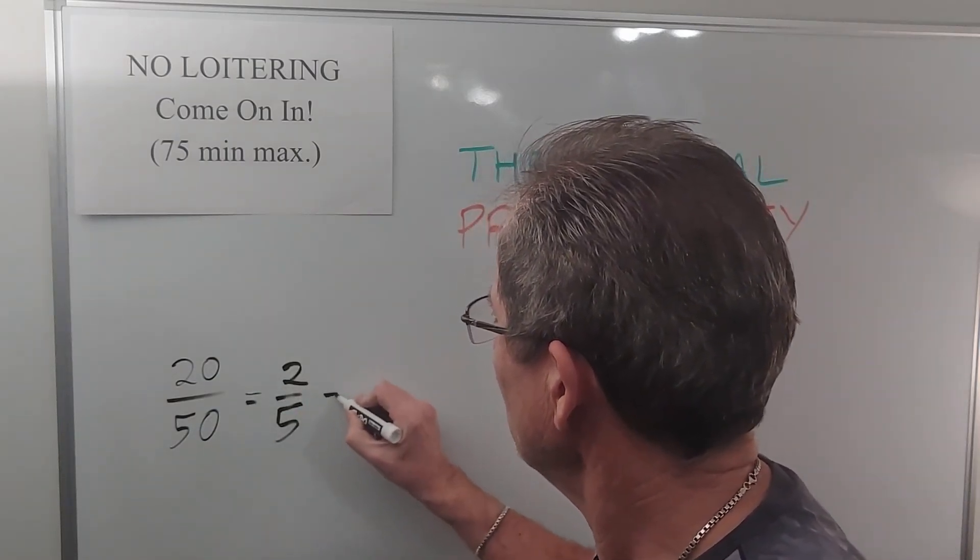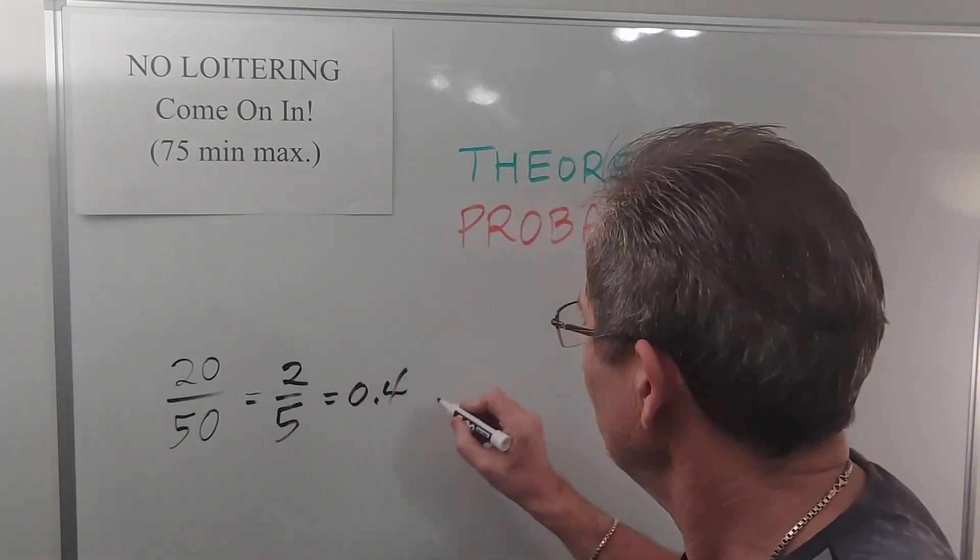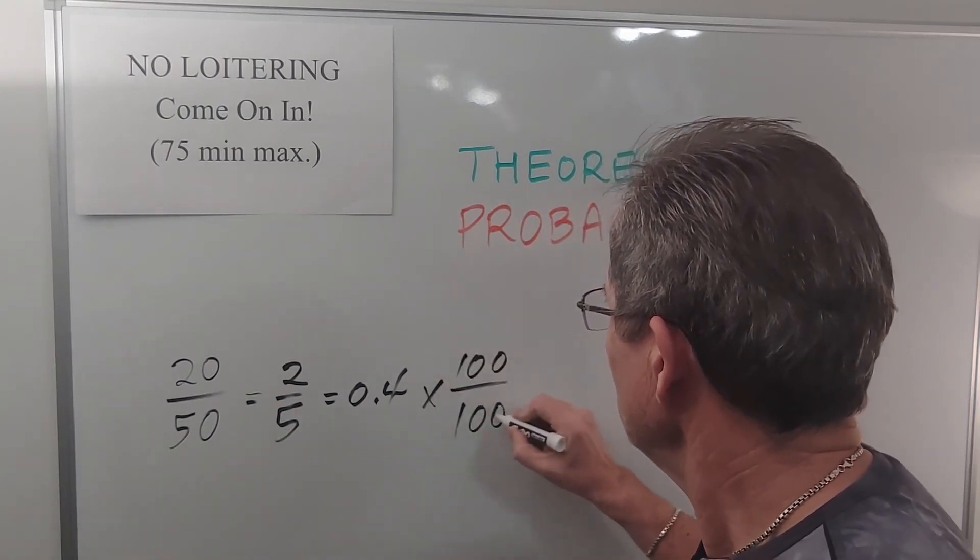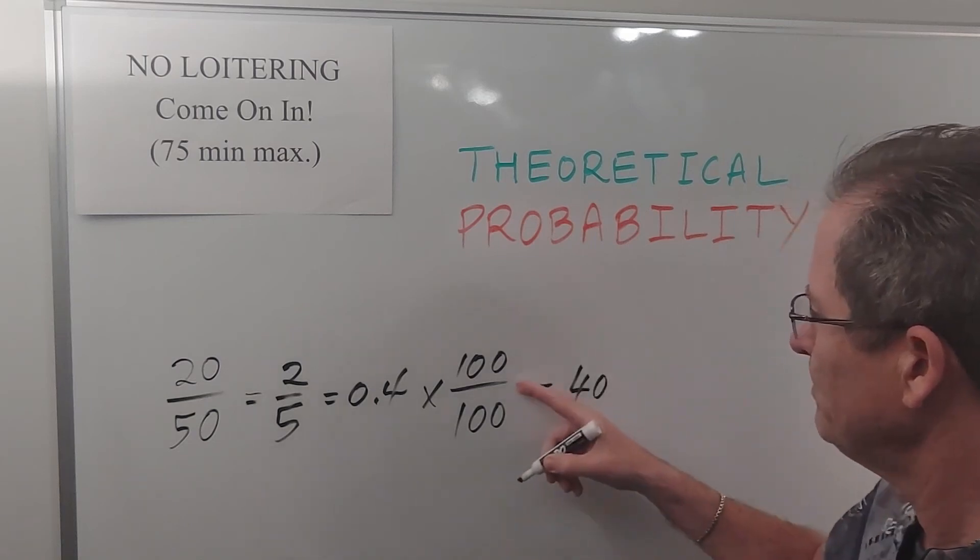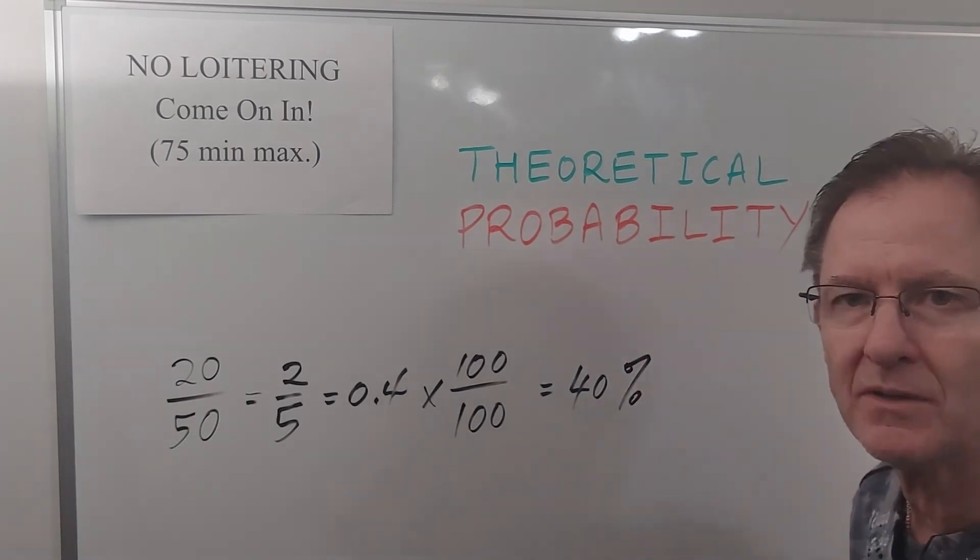Or 0.4 if you change it to a decimal - just do the division. Or you multiply by 100 over 100, you can write that as 40/100, and division by 100 is what percent means. Percent means per hundred.